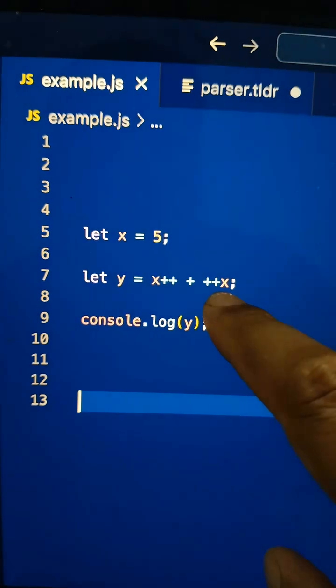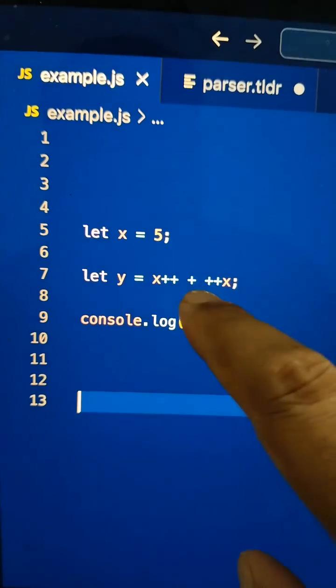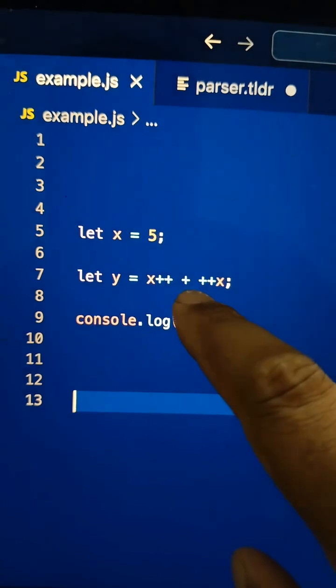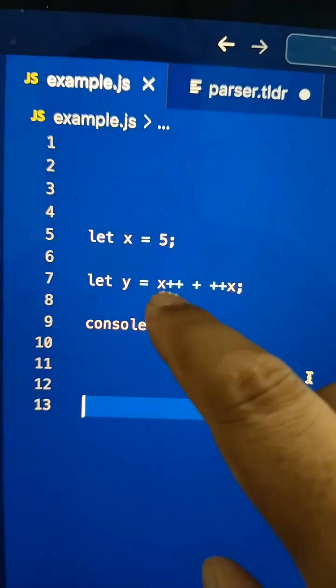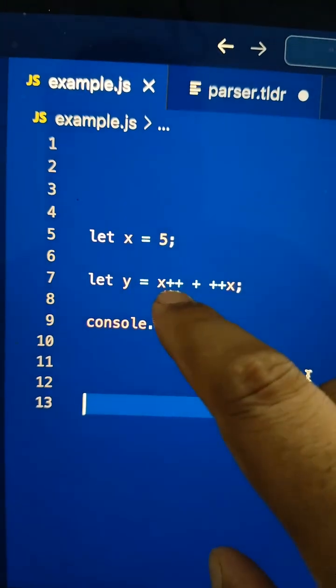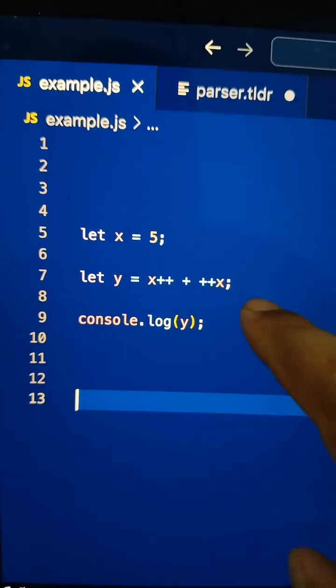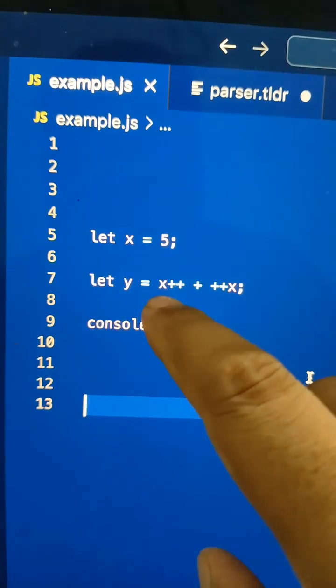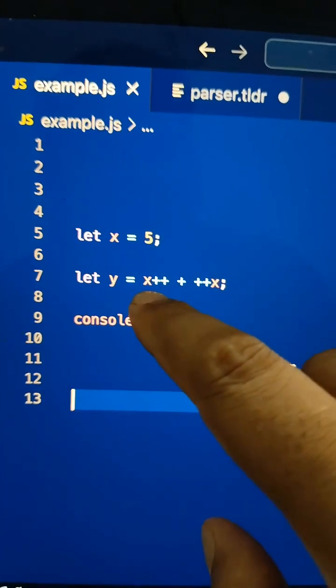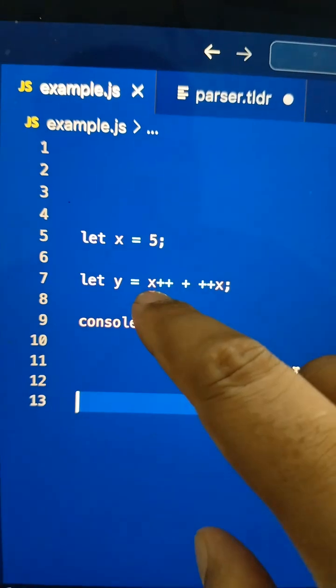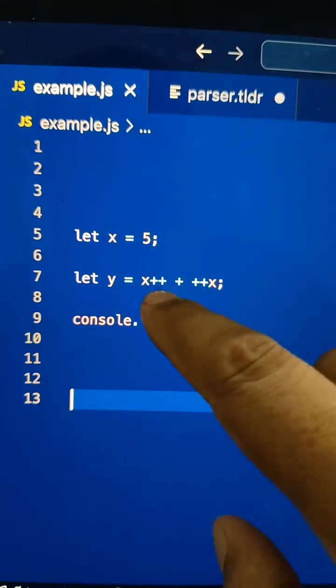So what will happen? The left-hand operand will use the current value for this addition operation, later it increments by 1. In this operation, the left-hand operand value will be 5, and then later x will become 6.